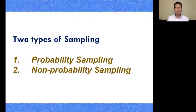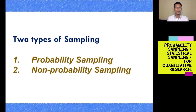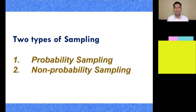There are two types of sampling techniques that we will be discussing today. First is probability sampling, and the second one is non-probability sampling. When we say probability sampling, it involves random selection, allowing members of the population to have a known chance of being selected or being part of the participants. It is also called statistical sampling.